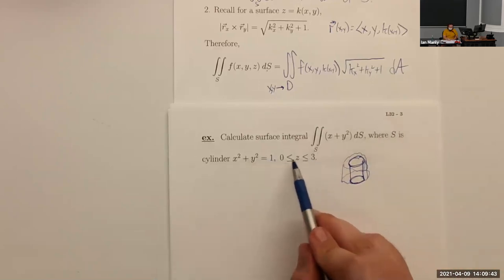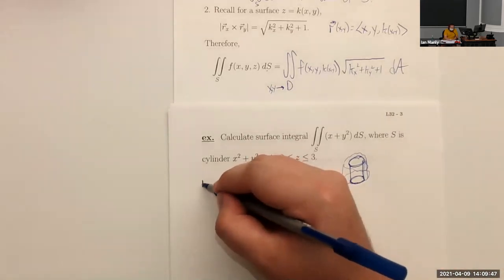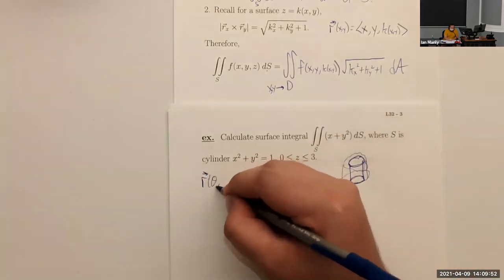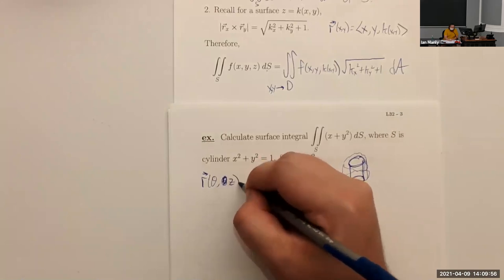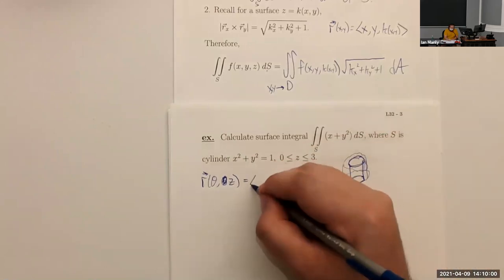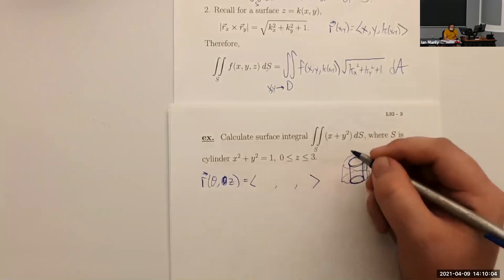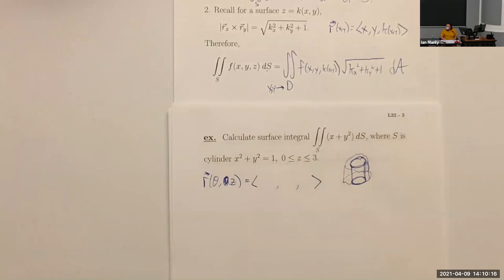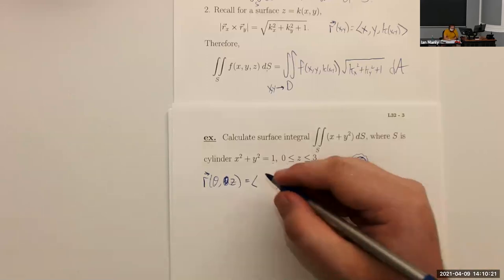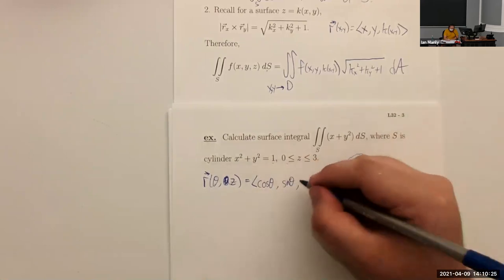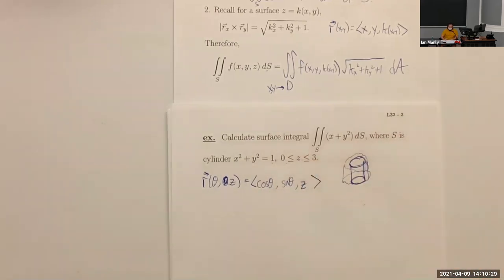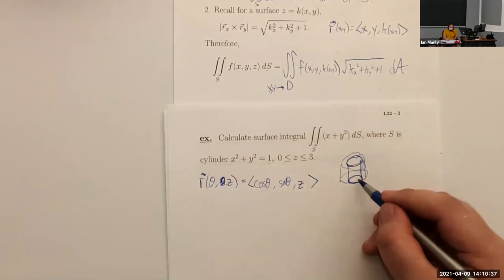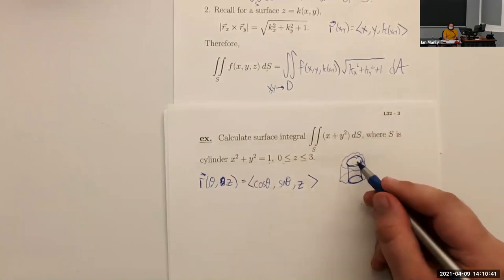The cylinder has equation x² + y² = 1, and z goes from 0 to 3. Using variables theta and z for parameterization — since we see x² + y² = 1, x should be cos(theta) and y should be sin(theta). So our parameterization is R(theta, z) = (cos θ, sin θ, z). We can reach any point on the surface using theta, which tells us how far we've spun around, and z, which tells us how high we are.